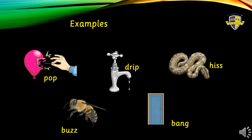Now look at these words: pop, drip, hiss, buzz, bang. What comes to your mind when you read these words? Sounds. These are all sounds. The sound the snake makes when it's moving, the sound that comes from the bees, the sounds when we slam the door. All these are sounds. So onomatopoeias are words that are basically sounds. They are used as words to describe the sound that they make. So whenever a balloon pops, we say the balloon popped. So what is 'pop'? Pop is an onomatopoeia.